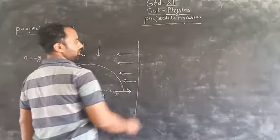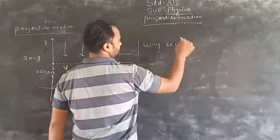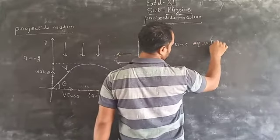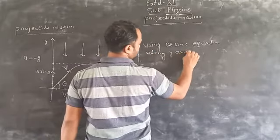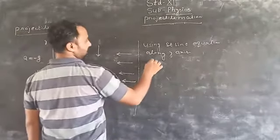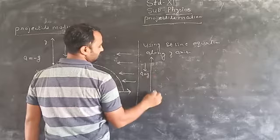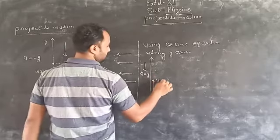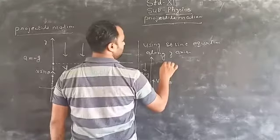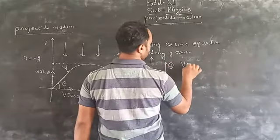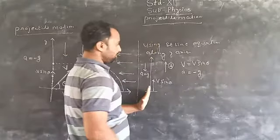We are using straight-line motion conditions along the y-axis. Along the y-axis, acceleration is in the negative direction (downward) and the initial velocity is v sin theta upward, which we take as positive. The displacement along the y-axis is equal to 0, because the particle moves upward and then comes back down, so the net displacement is zero.